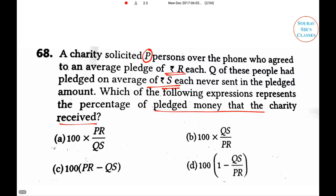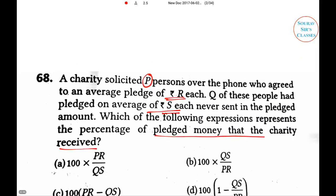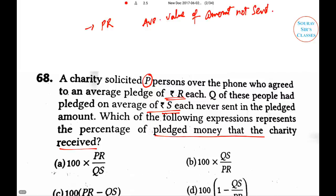The total amount solicited from p persons, each agreeing to pledge r, gives total revenue p×r. Of these, q did not send the pledged amount — the average value of the amount not sent is s. So the total amount pledged but not received is q×s.